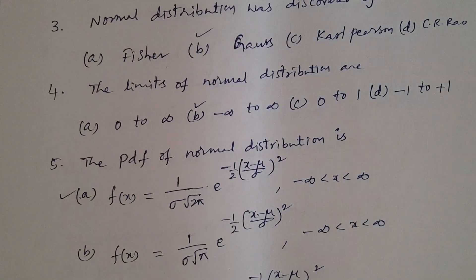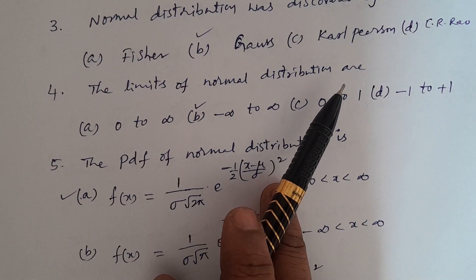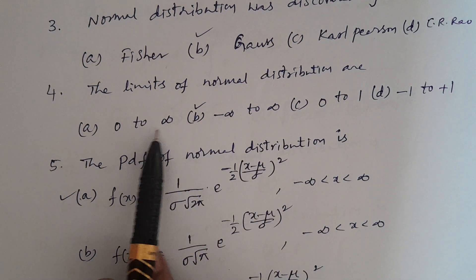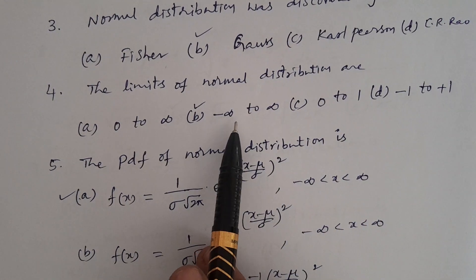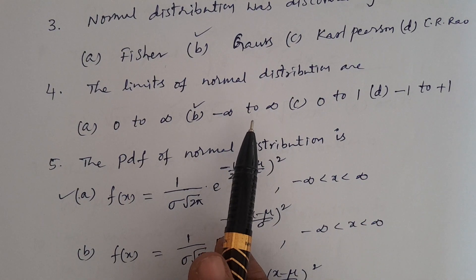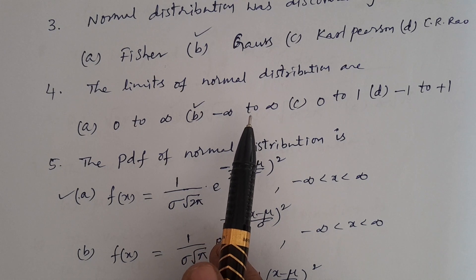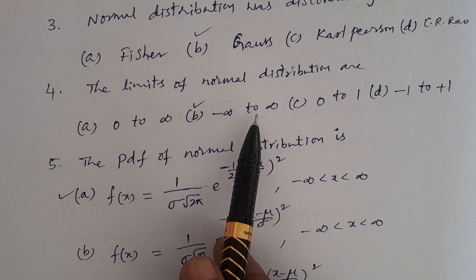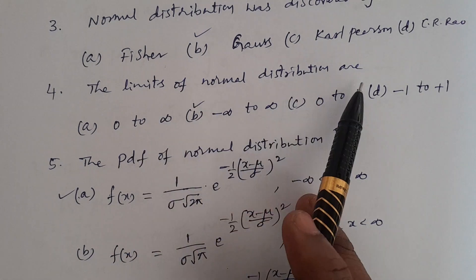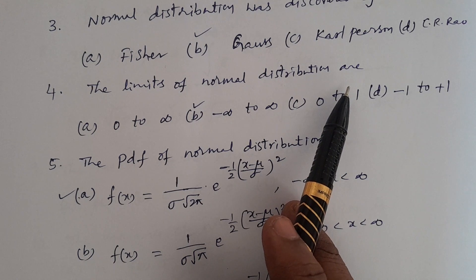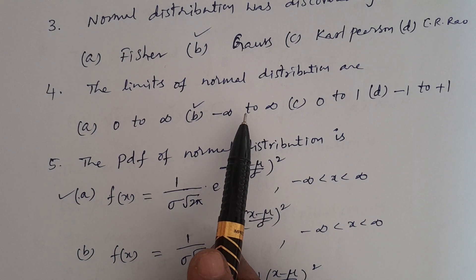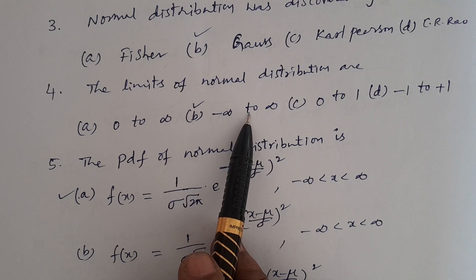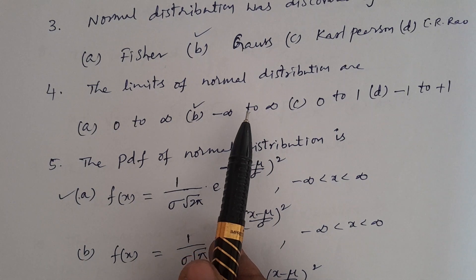Question number four. The limits of normal distribution are? Options: 0 to infinity, minus infinity to infinity, 0 to 1, or minus 1 to 1. The answer is minus infinity to infinity. Normal distribution takes the entire values in the real number system, from minus infinity to infinity. This is a very important distribution.